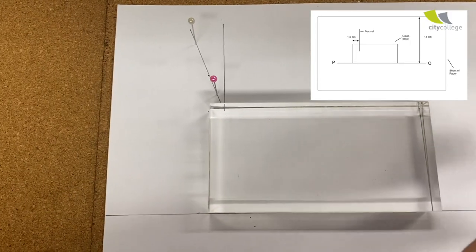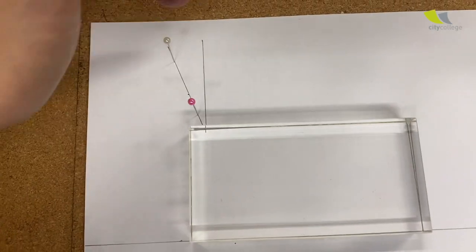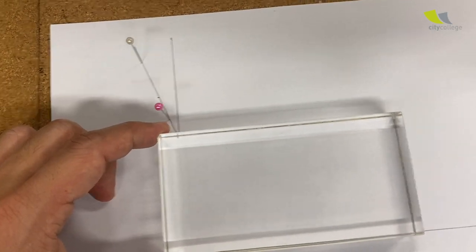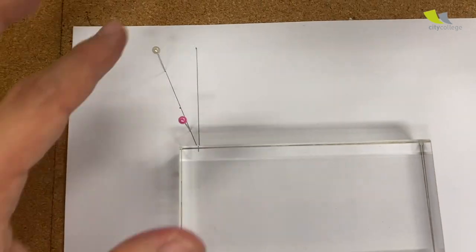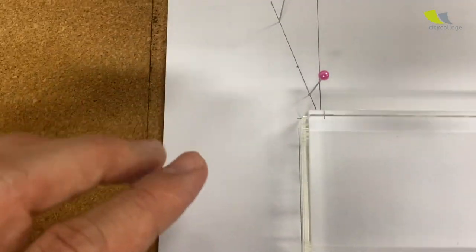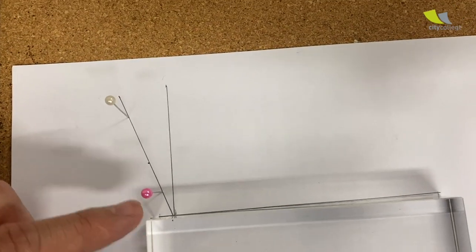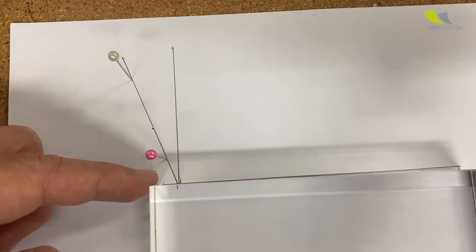Here we have our setup as per the paper. The normal line is one centimeter away, the glass block is in the frame, and we have two pins. One thing to note: because the pins are very close to the edge of the glass, don't mistake the edge of the glass for a pin.